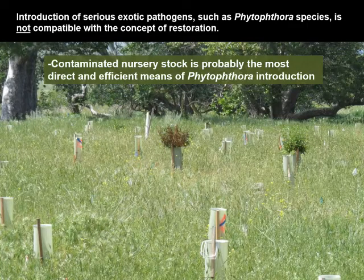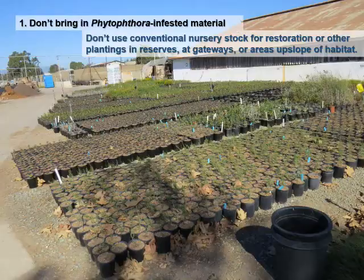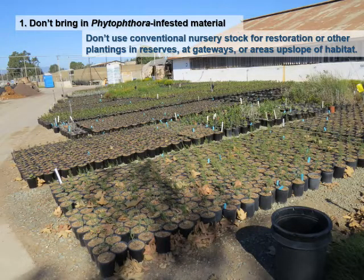With contaminated nursery stock being one of the most effective and direct ways to actually introduce pathogens to a site, we just need to stop doing it. It's an easy thing to do if you consider the alternatives and use them to the degree possible. One of the alternatives is just to avoid any type of conventional nursery stock, because we know that this is going to be contaminated.